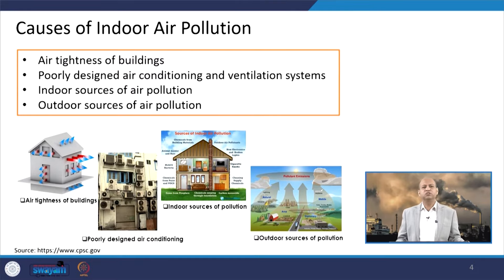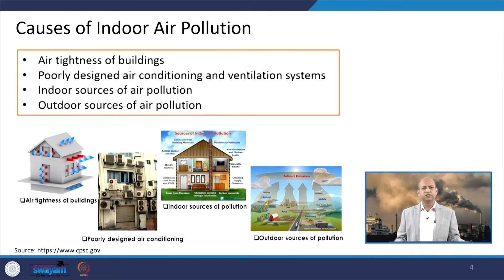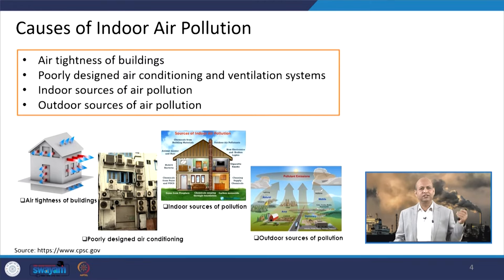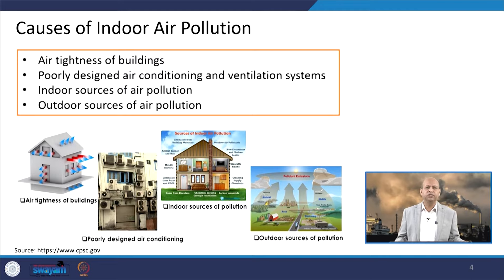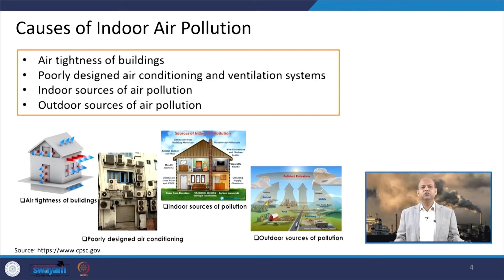When we talk about the causes of indoor air pollution, air tightness of the building may be responsible because it prevents air exchange. Air circulation is inhibited and whatever emissions are being generated indoors — like from the kitchen, from smoking, or from activities like using dryers, washing machines, mopping, or sweeping — they can generate a lot of dust or air pollutants and may stay inside the building due to poor ventilation.